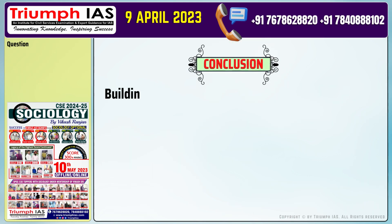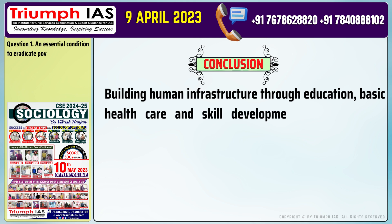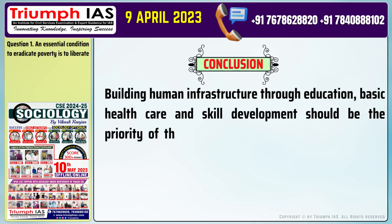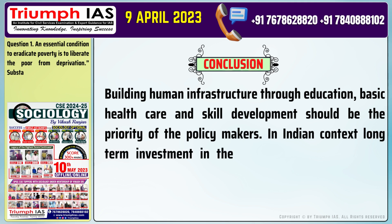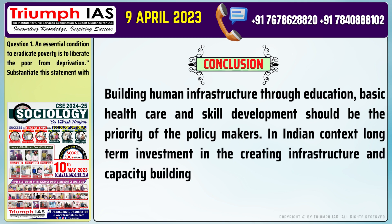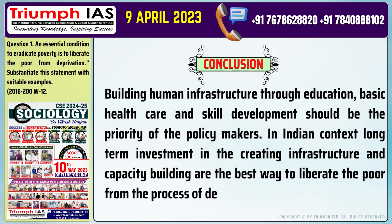In conclusion: Building human infrastructure through education, basic health care, and skill development should be the priority of policymakers. In the Indian context, long-term investment in creating infrastructure and capacity building are the best ways to liberate the poor from the process of deprivation.